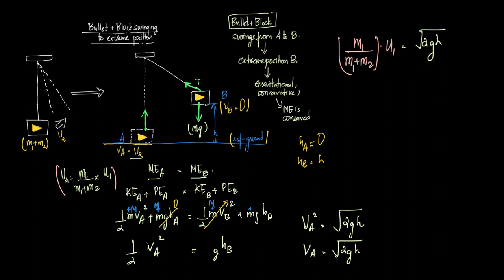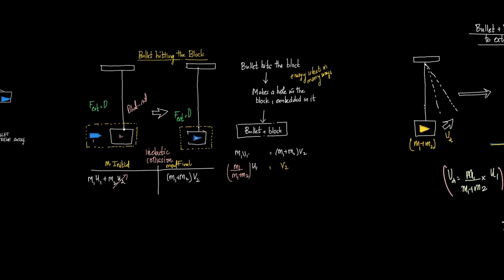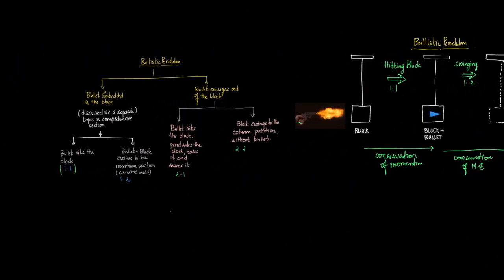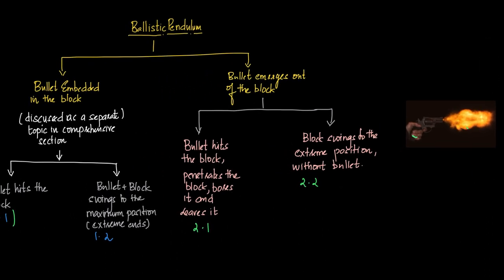Now what comes next is the true problem here — the case when the bullet, instead of getting embedded, emerges out of the block. We will discuss bullet hitting the block as case 2.1, and the block swinging to the extreme position as case 2.2.